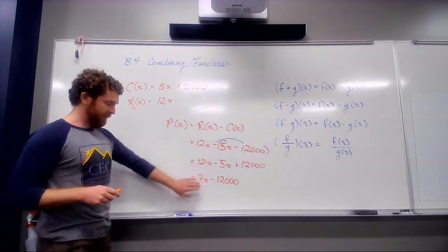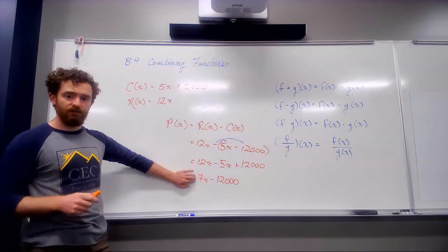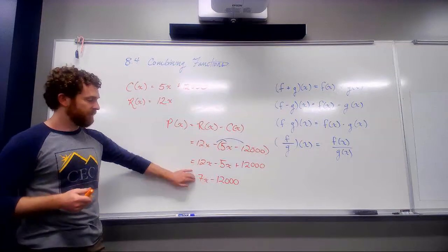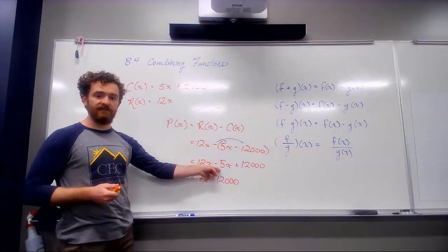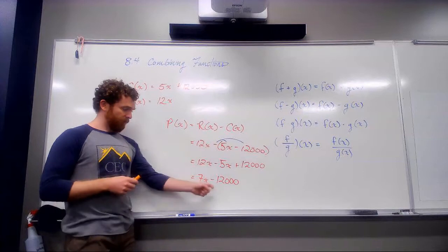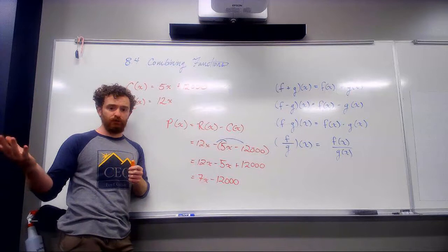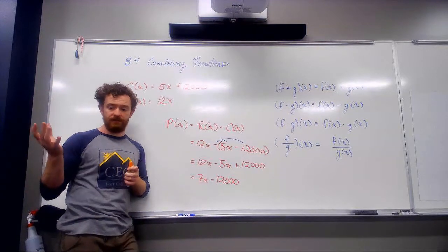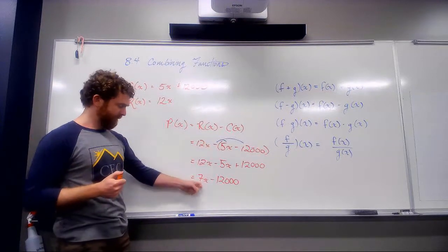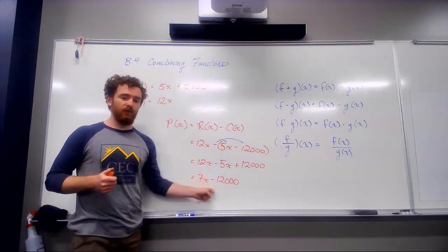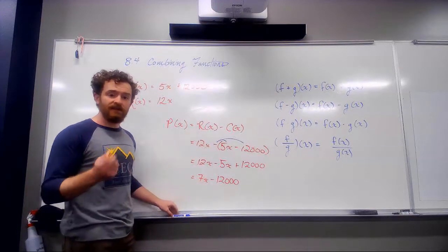We have 12X minus 5X plus the negative, putting that to positive, 12X minus 12,000. So if we think about it, their profit margin on each individual album is that $7. They're selling it for 12 and it takes them 5 to make it. And then to figure out when they're making profit, we do have to subtract that initial overhead from it. So once we get to a point that this value is greater than 12,000, that's when our band is making profit.